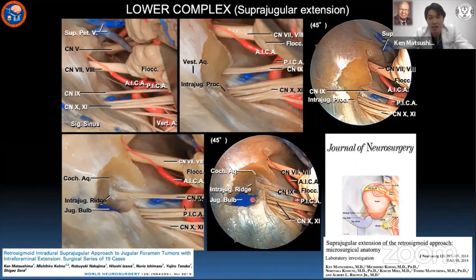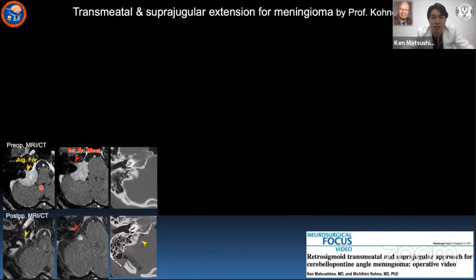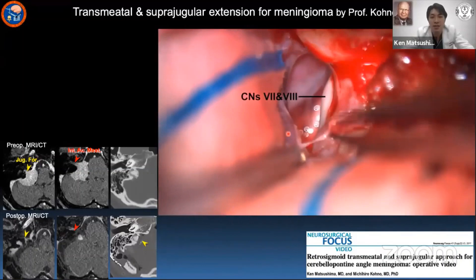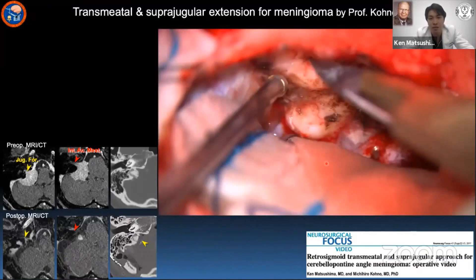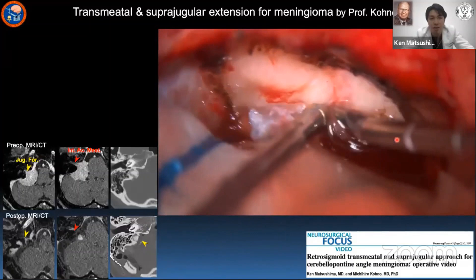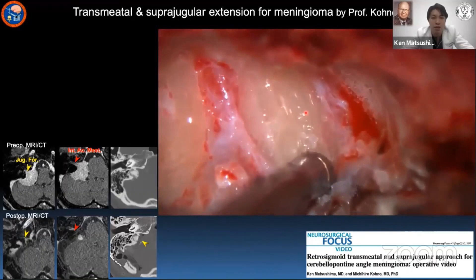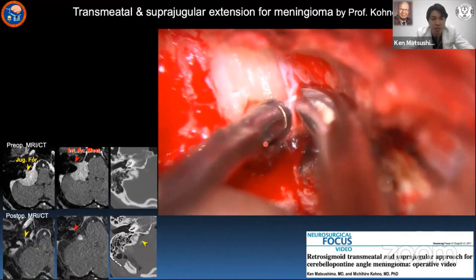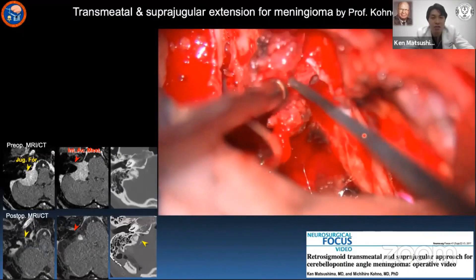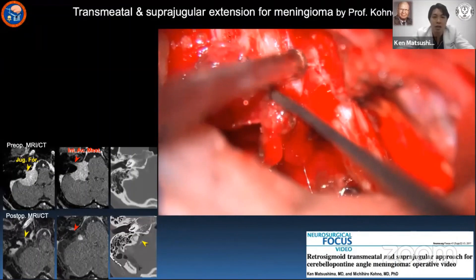This was my first project with Professor Rhoton, who taught me how to do research work from the basics. This is a meningioma extending into the upper jugular foramen and acoustic meatus. In the park bench position, we dissected the seventh and eighth cranial nerves from the cranial side and the lower cranial nerves from the caudal side, dissected the dura around the acoustic meatus and jugular foramen, and drilled the temporal bone to open the acoustic meatus and jugular foramen. After resecting the intrameatal tumor, we opened the jugular foramen and dissected the intrajugular tumor. You can see the glossopharyngeal nerve inside the jugular foramen.